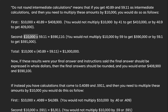Second, $10,000 x 59.11 equals $590,110. You would not multiply $10,000 by 59 to get $590,000 or by 59.1 to get $591,000.